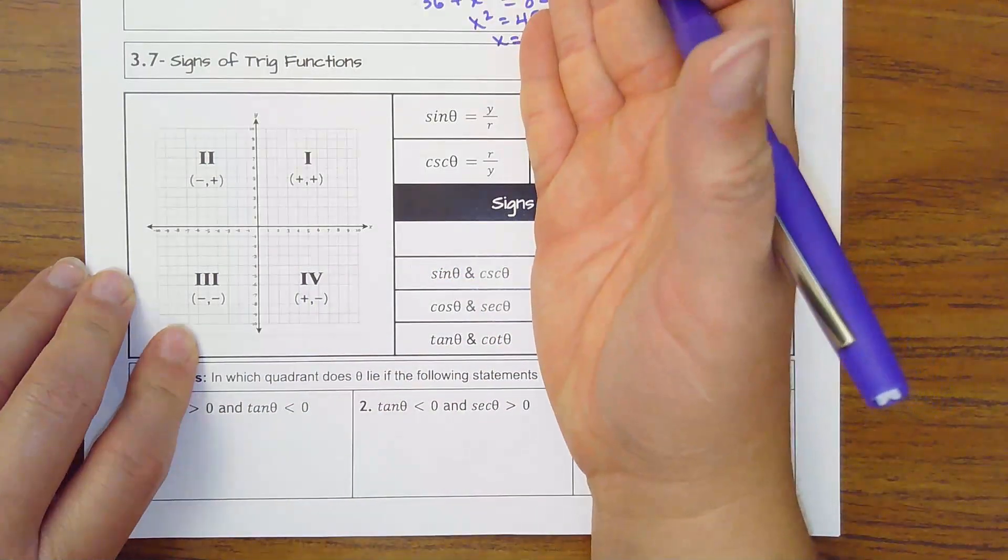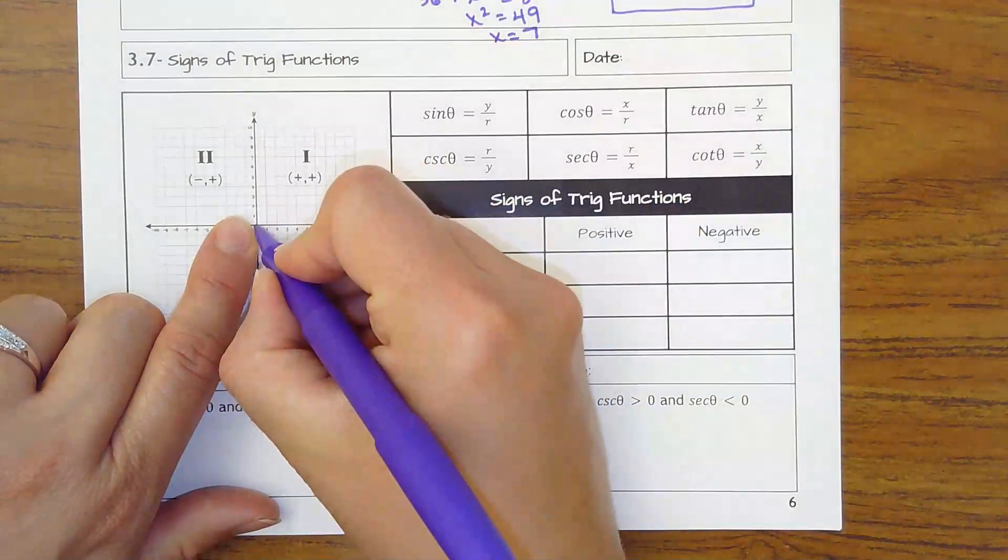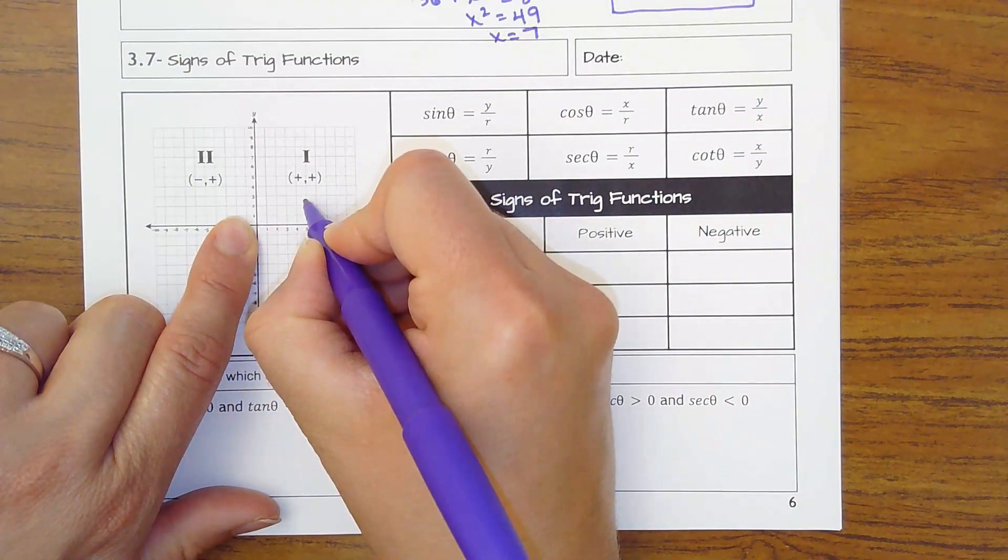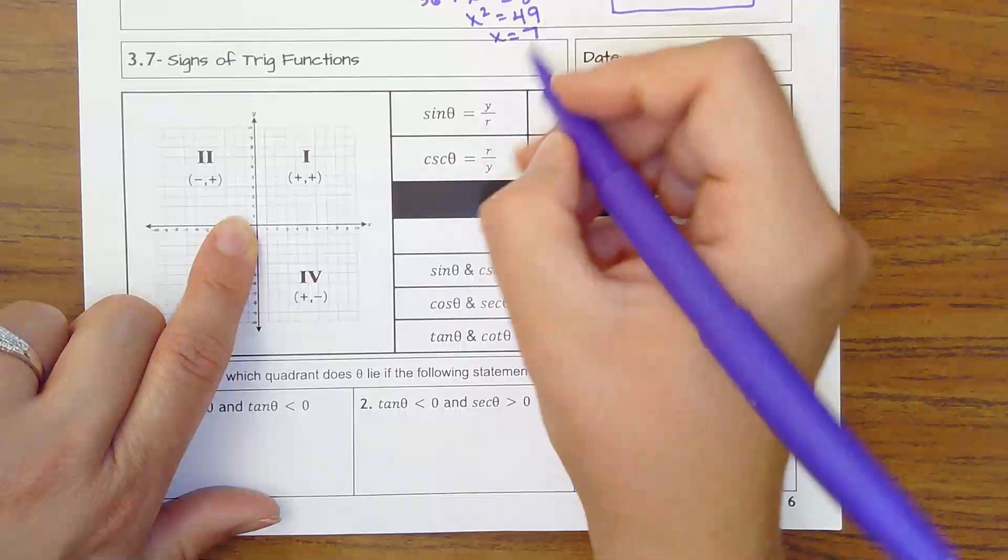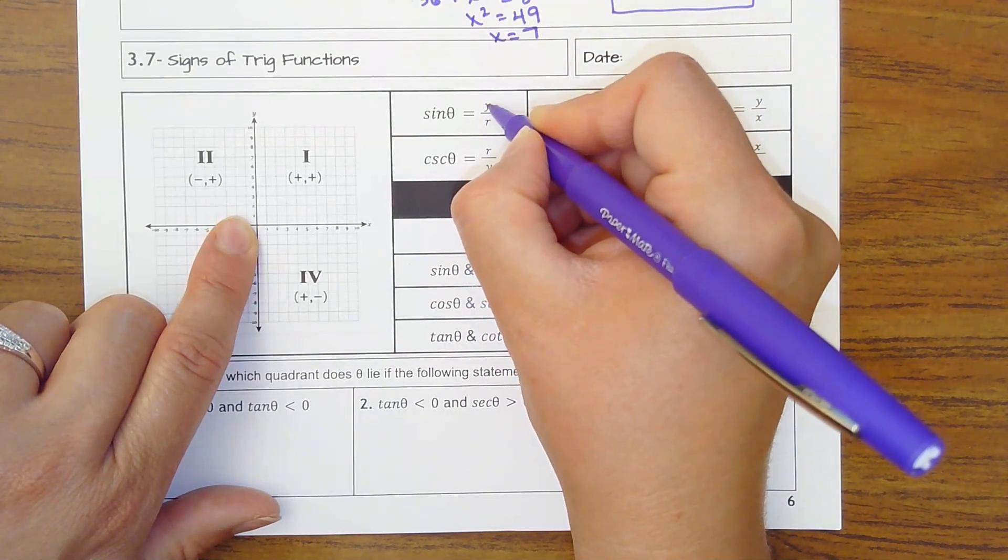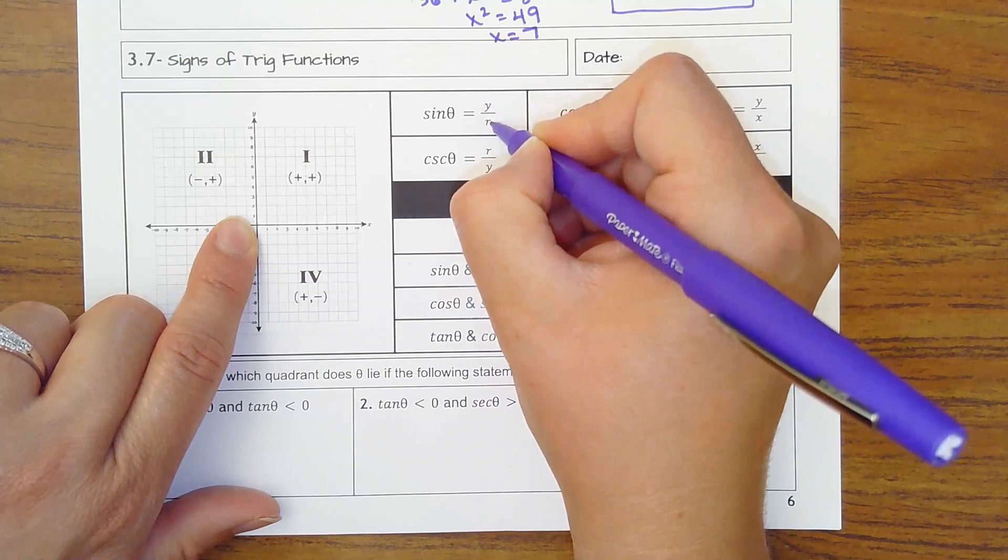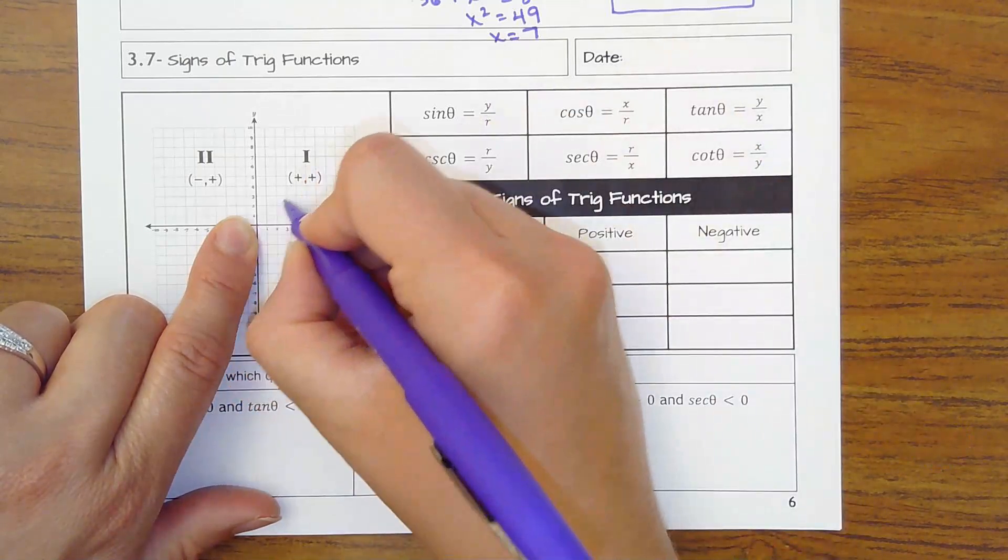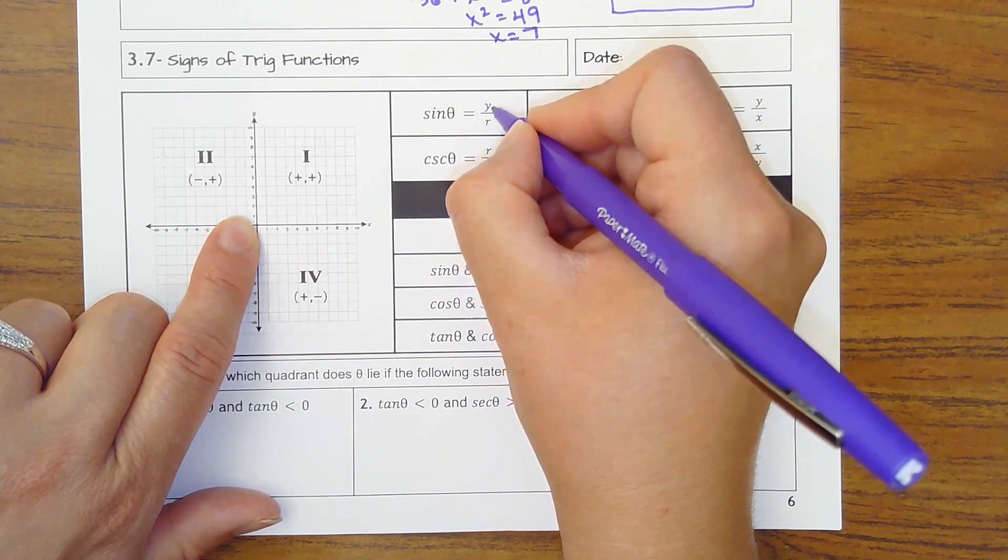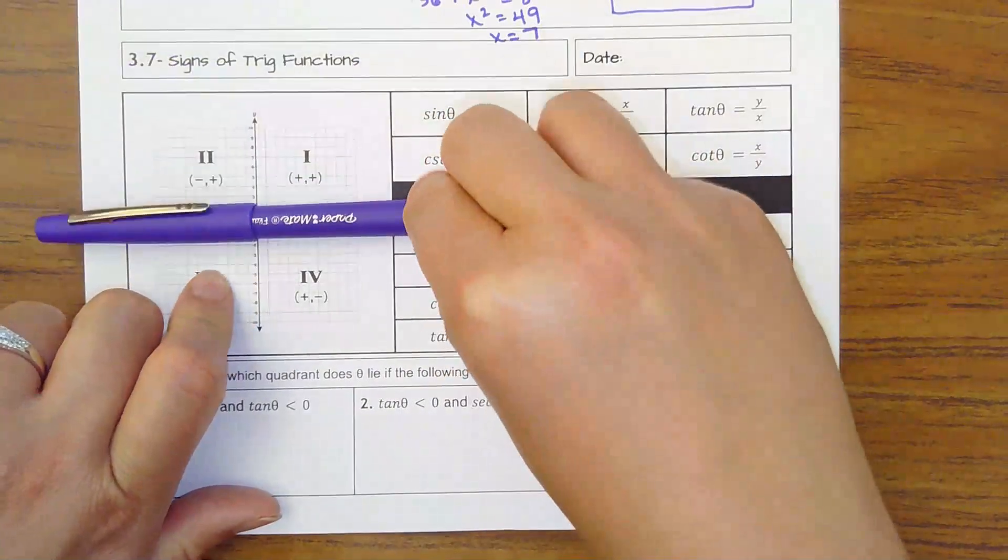So thinking about sine and thinking about our triangles, picture a triangle and angle. Remember the opposite side from that angle is always the height, the y value. So I've got to think of where on my graph are y's positive because the radius or the hypotenuse was always positive.